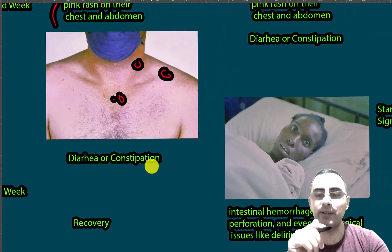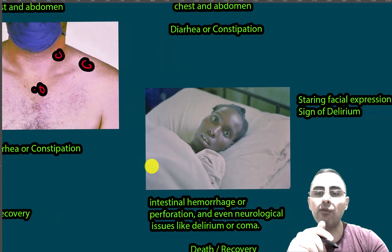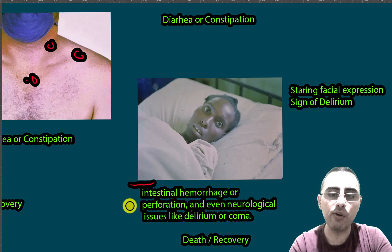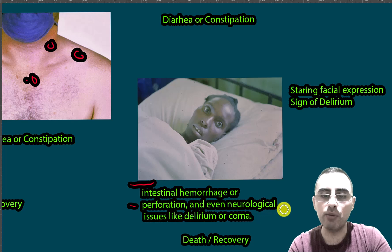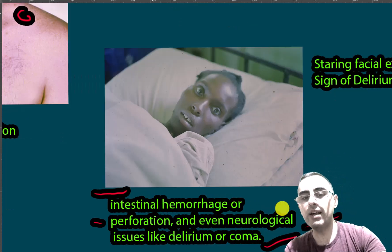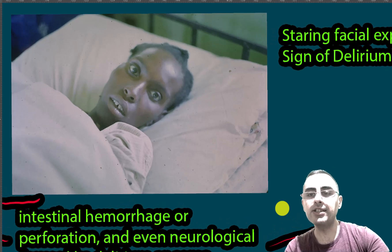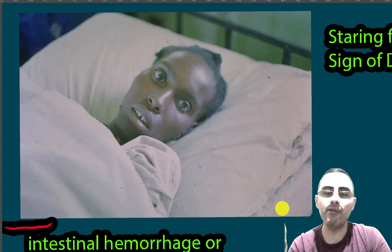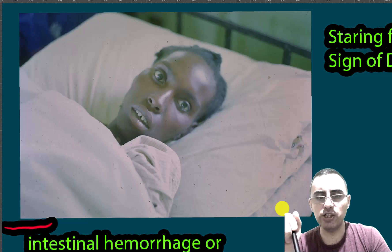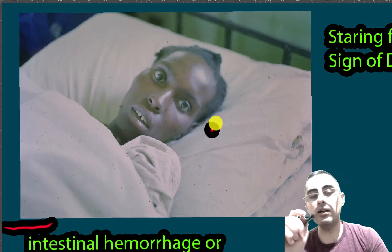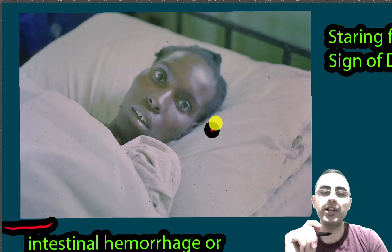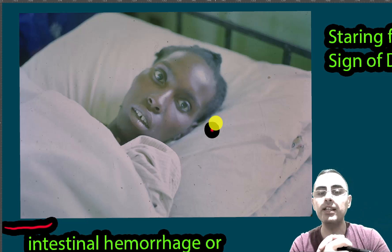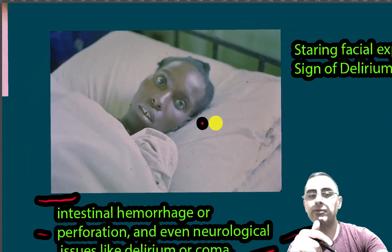In the third week, patients with the uncomplicated form begin to recover if treated. However, in the complicated form, intestinal hemorrhage and perforation of the intestines can occur, along with neurological symptoms such as delirium and coma. Here you can see a staring facial expression in a woman infected by typhoid fever, which is already a sign of a complication — specifically delirium.